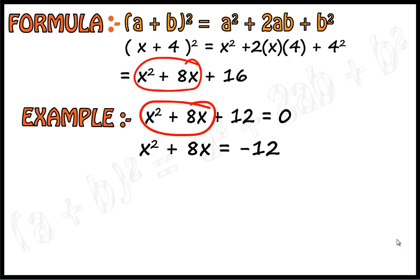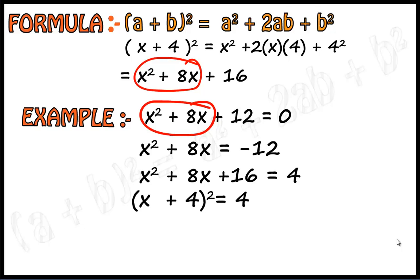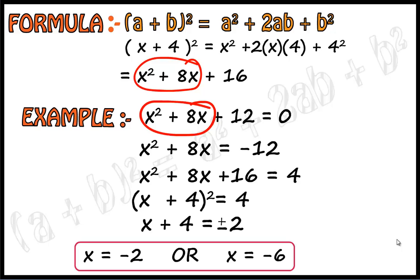To make the RHS of equation 1 similar to the LHS of equation 2, we need to add 16 to equation 2. We thus get x square plus 8x plus 16 equals 4. Therefore x plus 4 the whole square equals 4. Therefore x plus 4 equals plus or minus 2. Therefore x equals minus 2 or x equals minus 6.